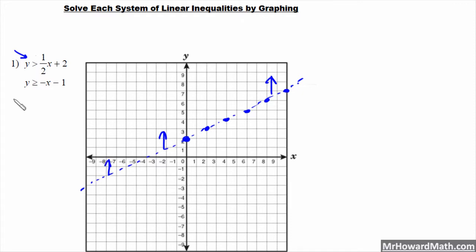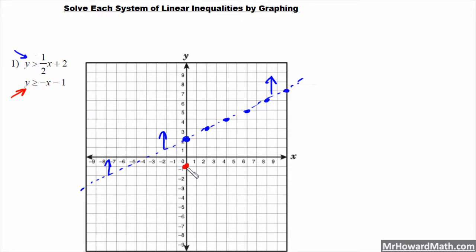Now this equation in red. Notice this one has greater than or equal to, so I can use a solid line when I graph it, and it'll be shaded above. Its y-intercept is negative 1, and its slope is negative 1, so it's down 1 over 1. Work it back the other way as well. Plot that one in as a solid line.